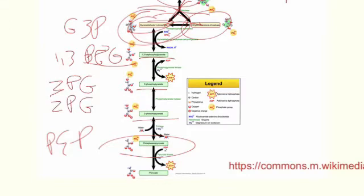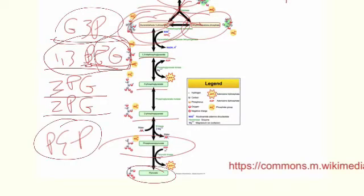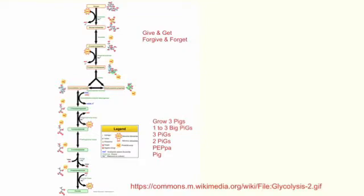So this is not quite so easy. First of all, I want to tell you that I'm using a cartoon that my daughter watches as a memory device, and so we'll start with G3P. This is grow three pigs, one to three big pigs, so big B, PG is pig. Three pigs, two pigs, Peppa pig. So that's grow three pigs, one to three big pigs, three pigs, two pigs, Peppa pig.